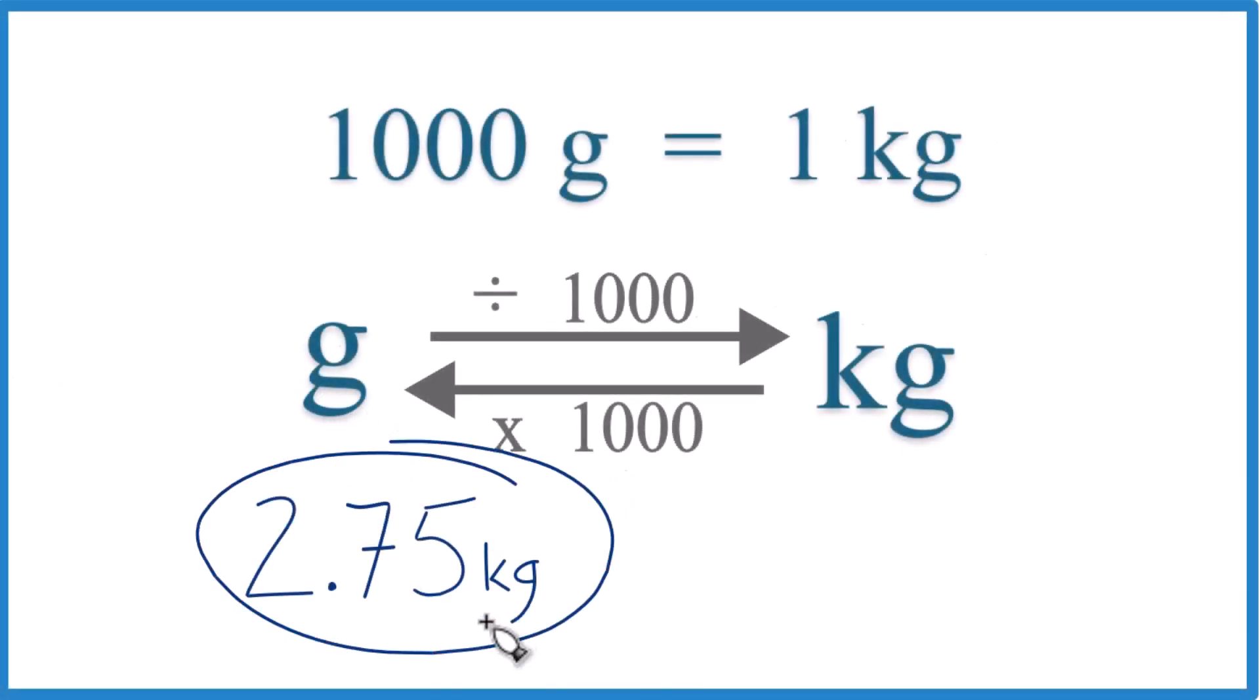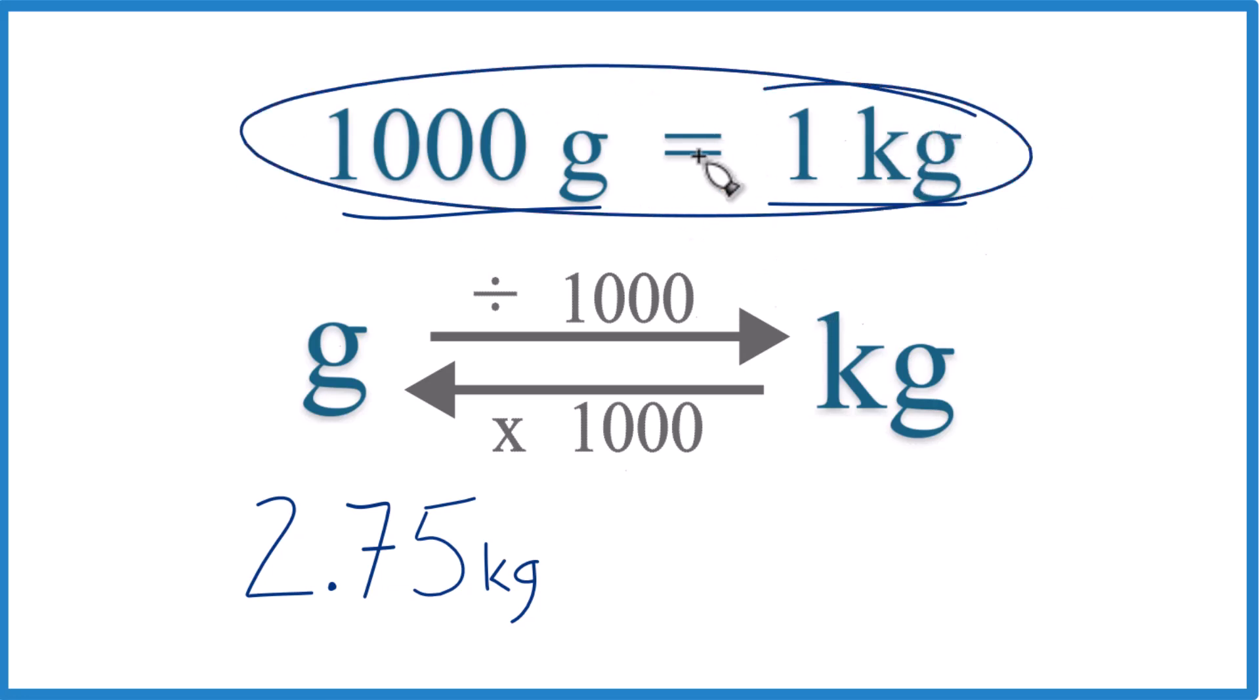Let's convert 2.75 kilograms to grams. The first thing you need to memorize here: 1,000 grams equals 1 kilogram. And that's what we call a conversion factor. So you need to remember this.